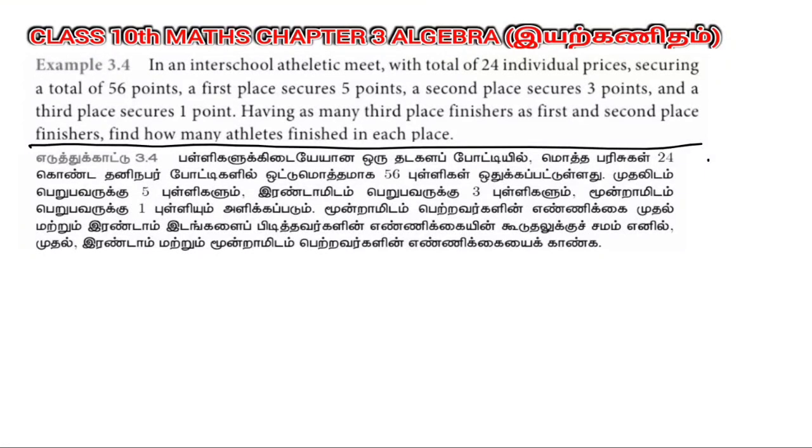Hi everyone, this is class 10 math chapter 3 algebra example 3.4. In an inter-school athletic meet with a total of 24 individual prizes securing a total of 56 points, first place secures 5 points, second place secures 3 points, and third place secures 1 point. Having as many third place finishers as first and second place finishers, find how many athletes finished in each place.